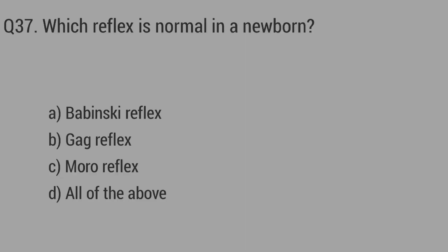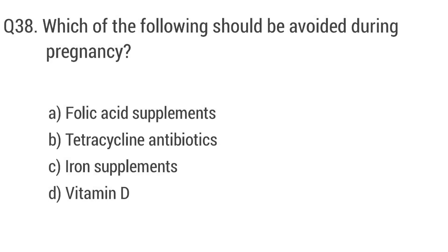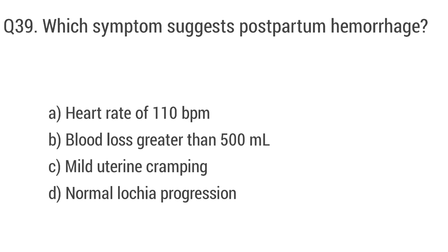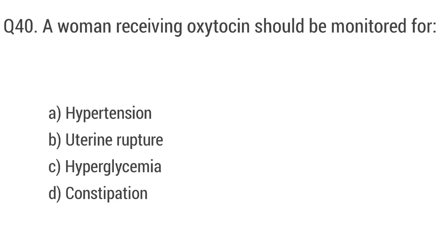Question 38: Which of the following should be avoided during pregnancy? The right answer is option B: Tetracycline antibiotics. Question 39: Which symptom suggests postpartum hemorrhage? The right answer is option B: Blood loss greater than 500 milliliters. Question 40: A woman receiving oxytocin should be monitored for? The right answer is option B: Uterine rupture.